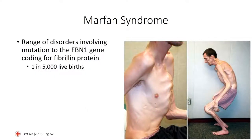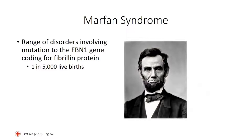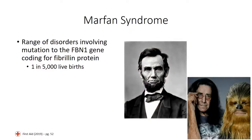The next condition to consider is Marfan syndrome, which includes a range of disorders that specifically involve mutation to the FBN1 gene, which codes for the fibrillin-1 protein. About 1 in 5,000 children are born with Marfan syndrome, which is inherited in an autosomal dominant fashion. Three-quarters of the cases involve inheritance from an affected parent, with the remaining cases being the result of de novo mutations. Prominent individuals affected include American President Abraham Lincoln and Peter Mayhew, the actor who portrayed Chewbacca throughout the Star Wars franchise.